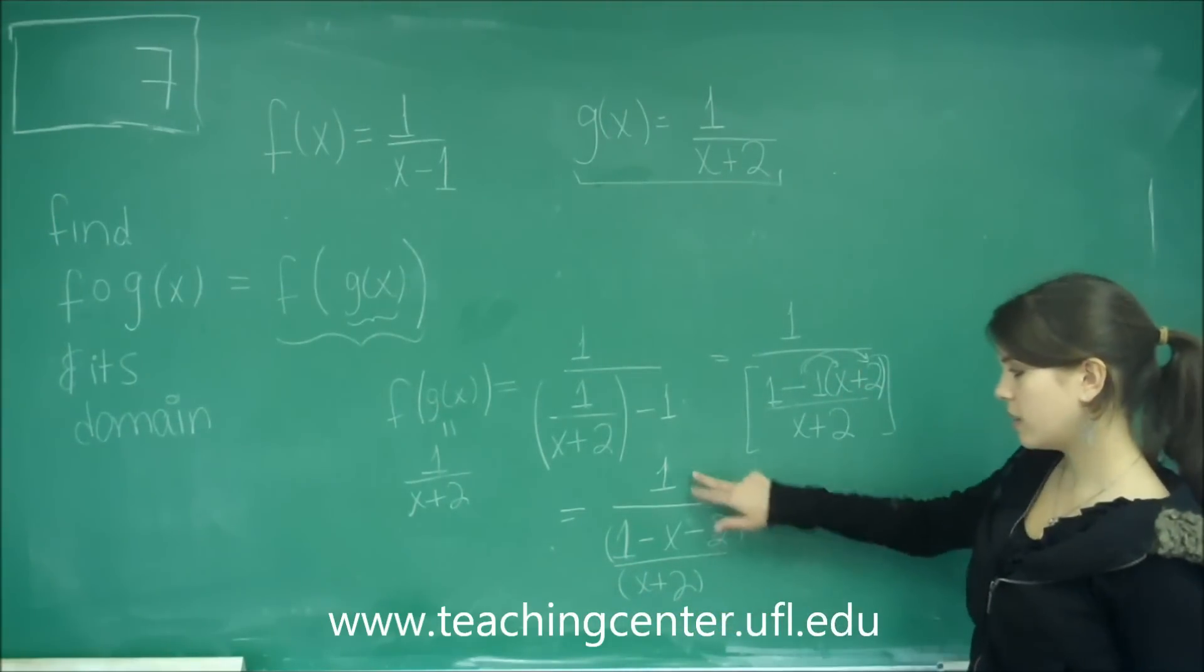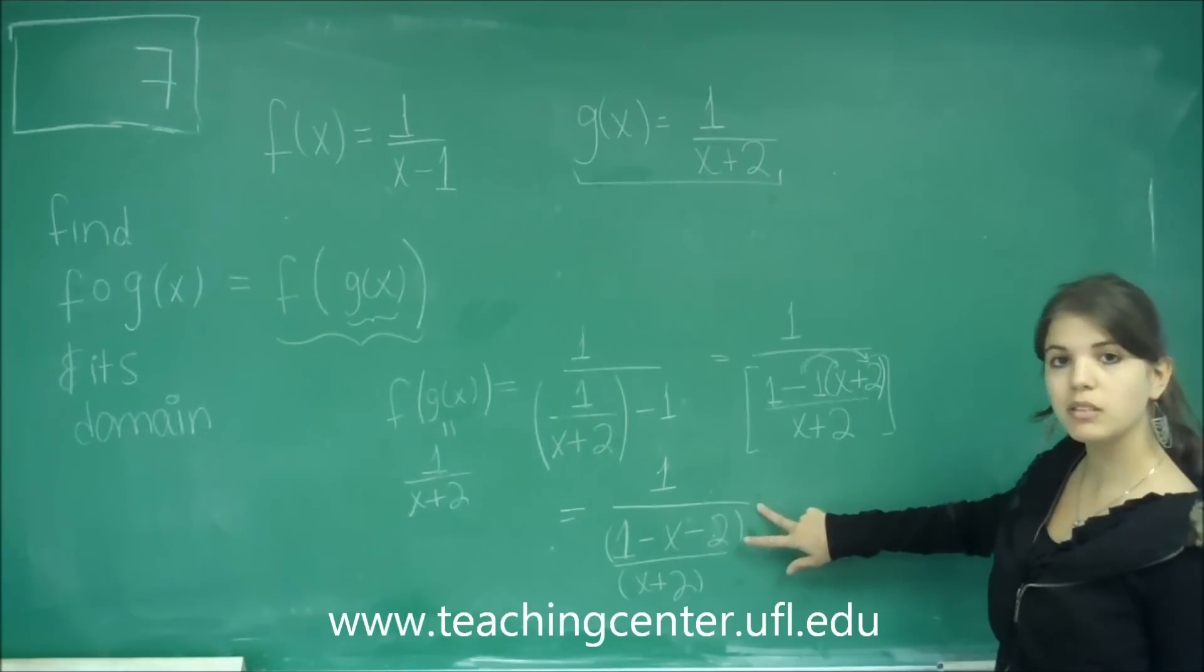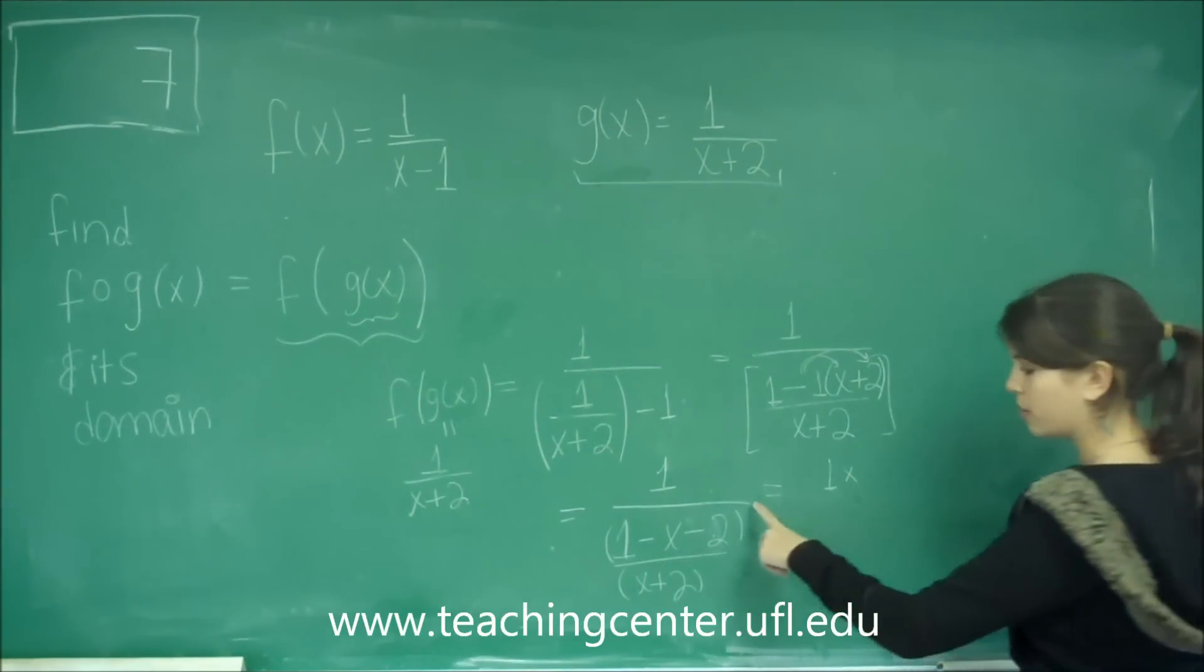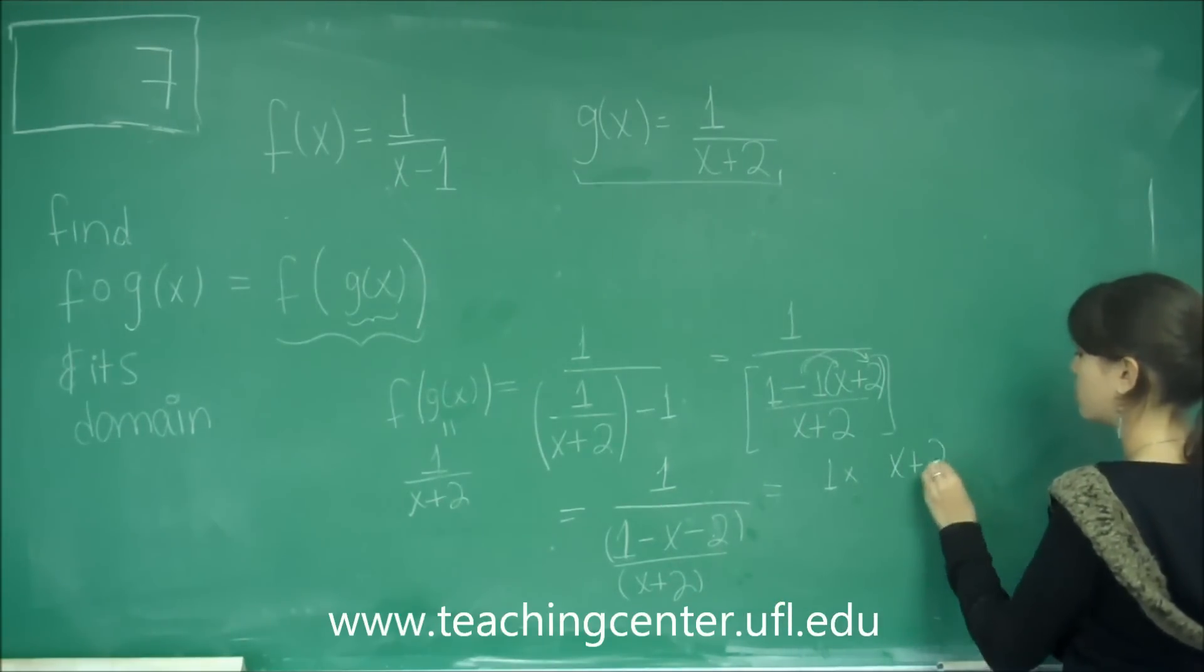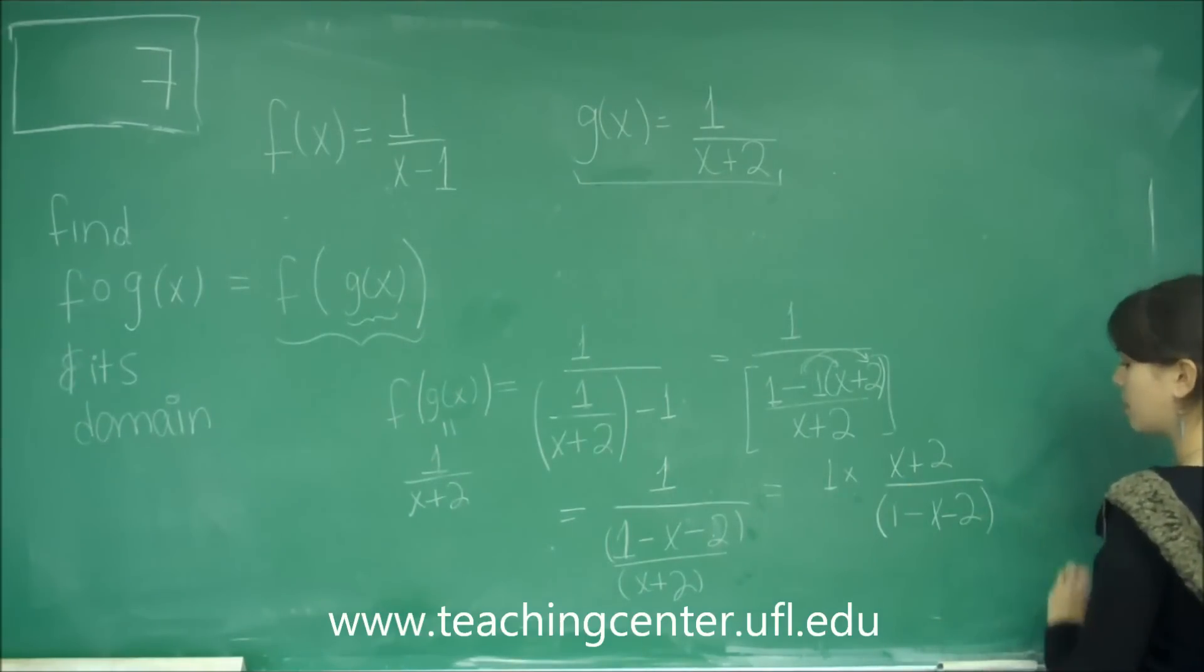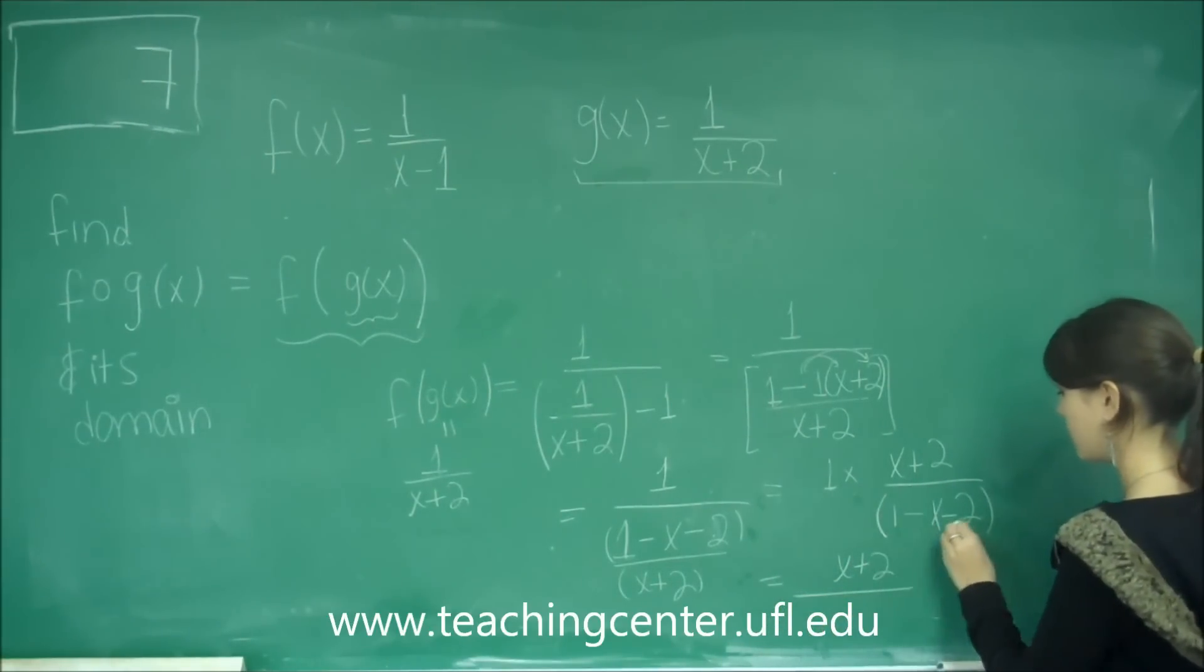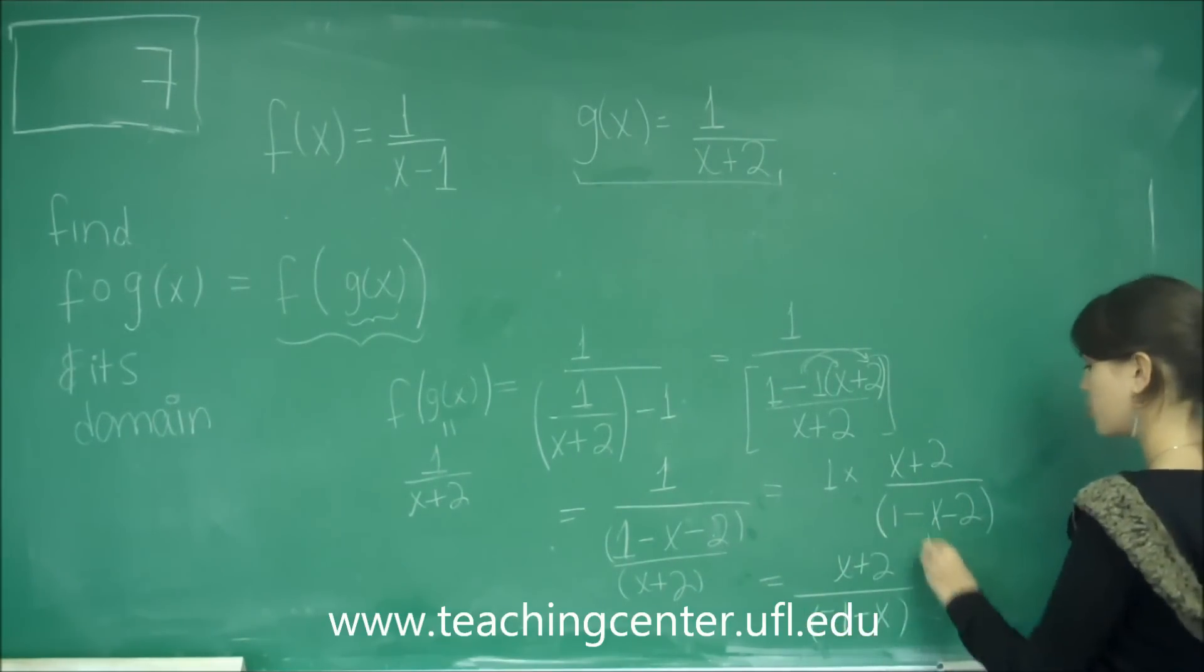If we want to divide 1 by this fraction, what we have to do is change the division sign into a multiplication and flip this fraction. So we get 1 times, we change the division to a multiplication and flip this guy. So we get x plus 2 on the top, 1 minus x minus 2 on the bottom. We can combine the 1 and the negative 2, so we get x plus 2 over negative 1 minus x. That's the final answer.